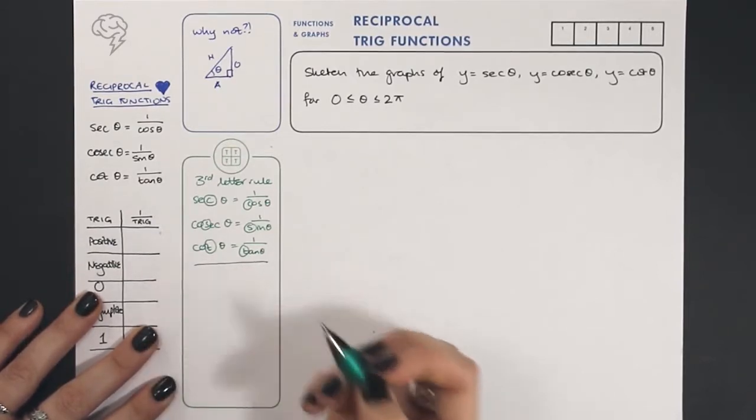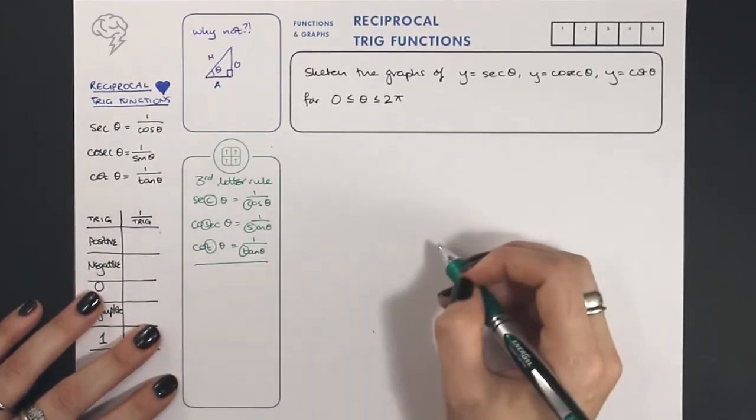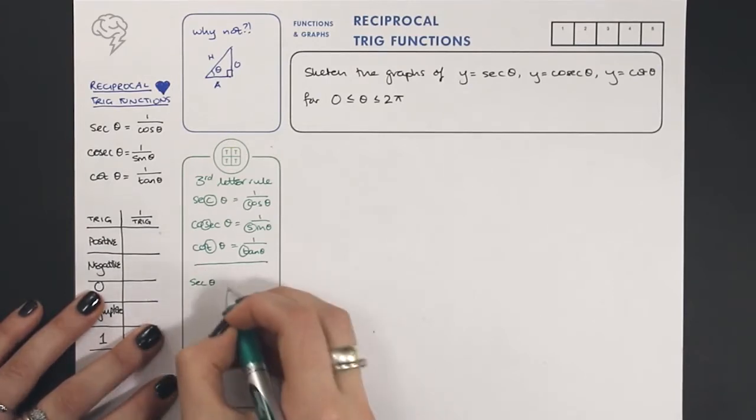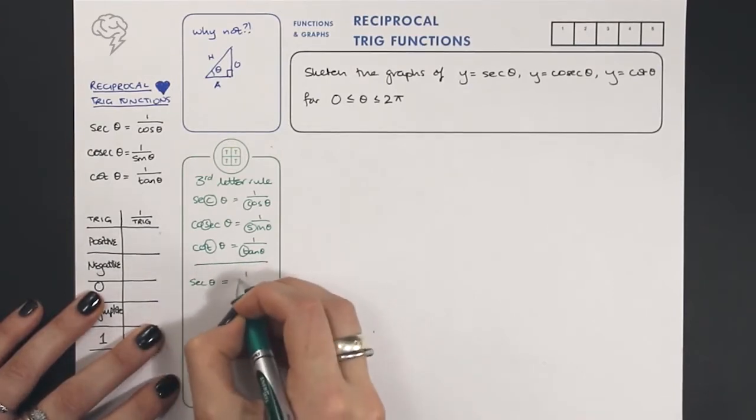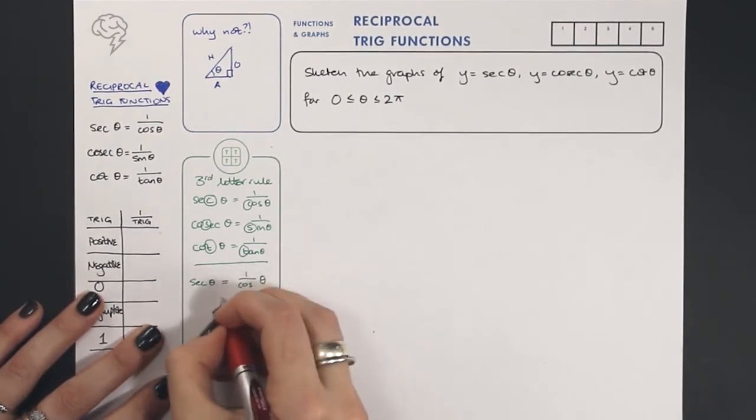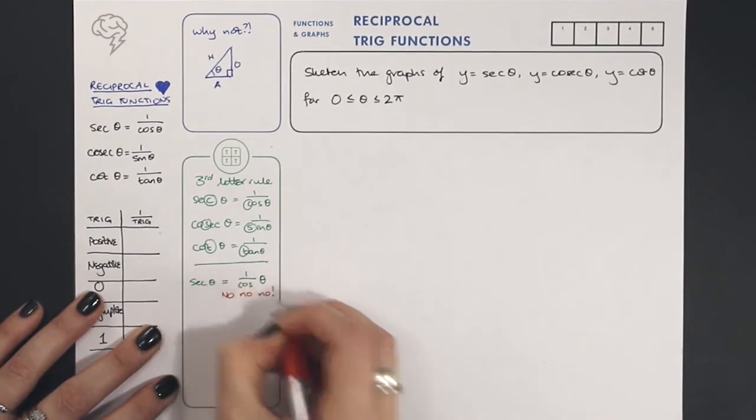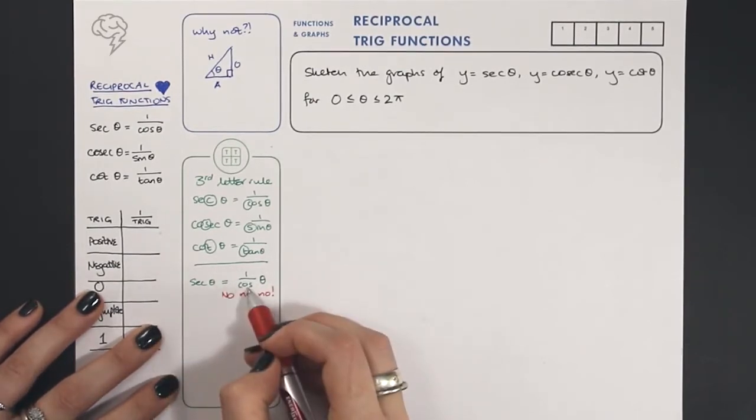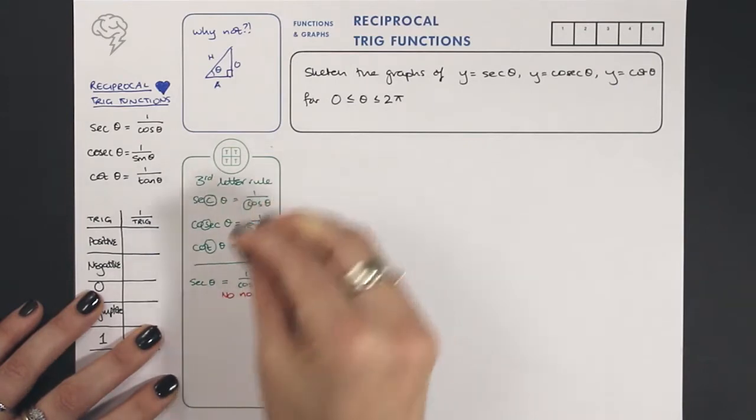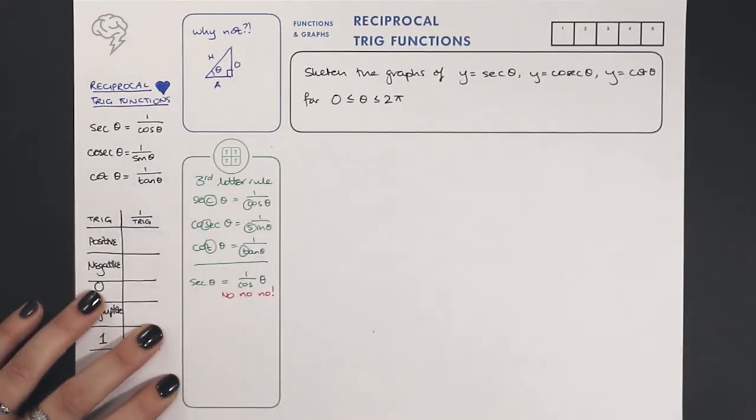Now, very important, you might only do this at the beginning, but it's worth pointing out. Sec theta is not one over cos theta. That makes no sense at all. You can't have one over cos theta. So don't think of sec as one over cos, even though we say that all the time. Sec theta is one over cos theta, not one over cos theta. That doesn't make any sense.